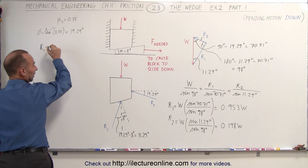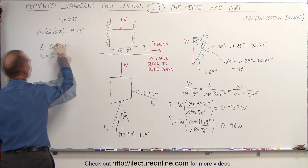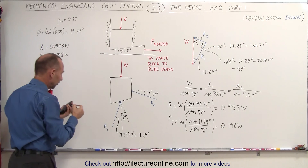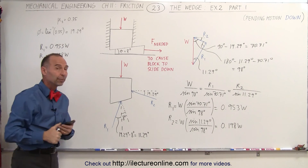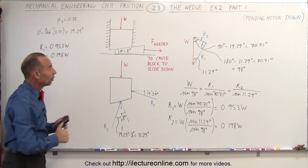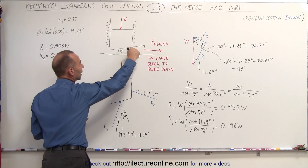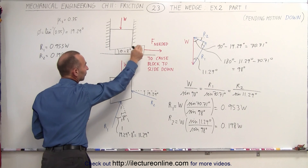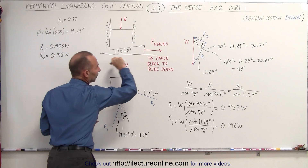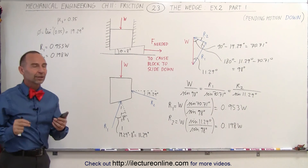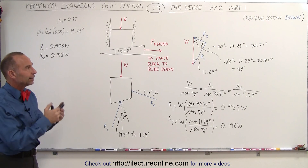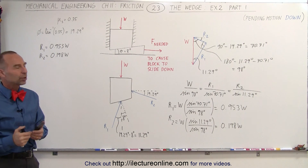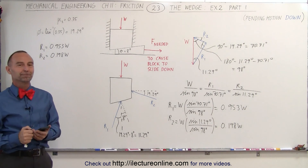Let's write down R1 and R2 so we can use those values in the next part. These are necessary for part two, when we draw a free body diagram on the wedge itself to find the force required to pull the wedge out — the pending motion downward force, as we call it. And that's how it's done.